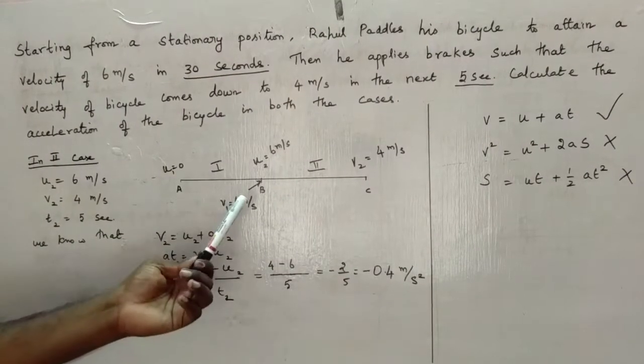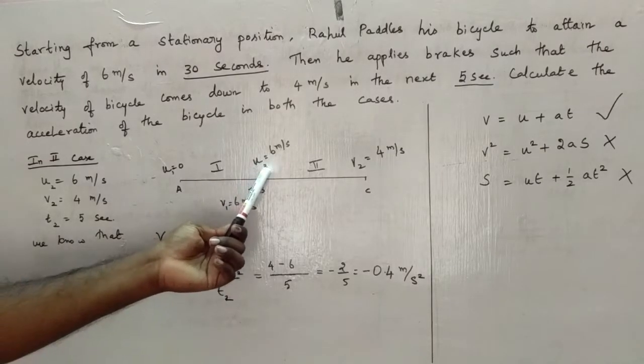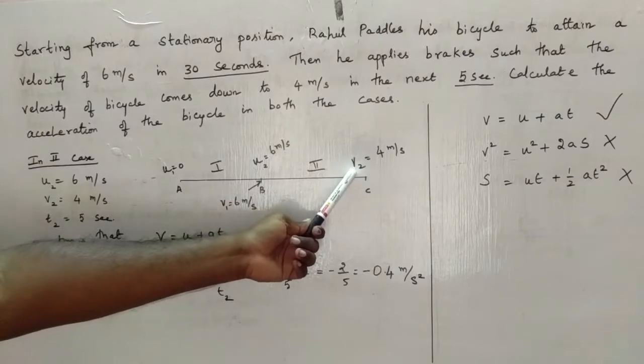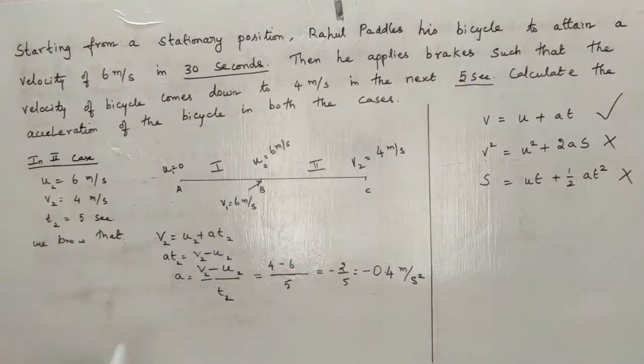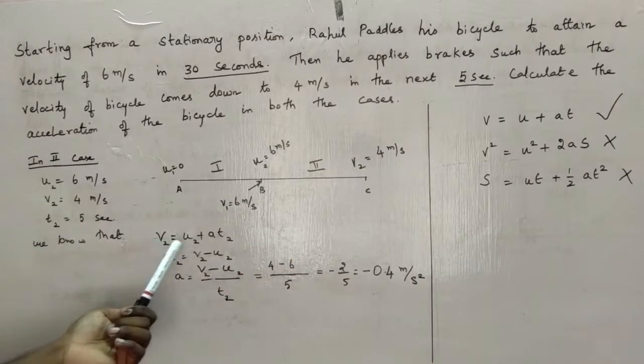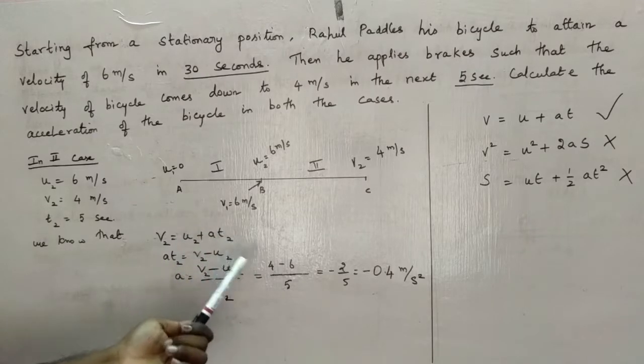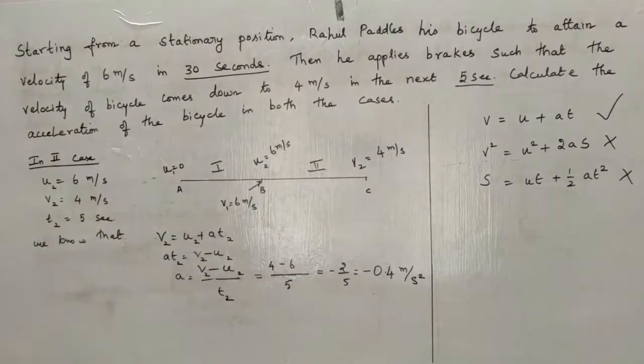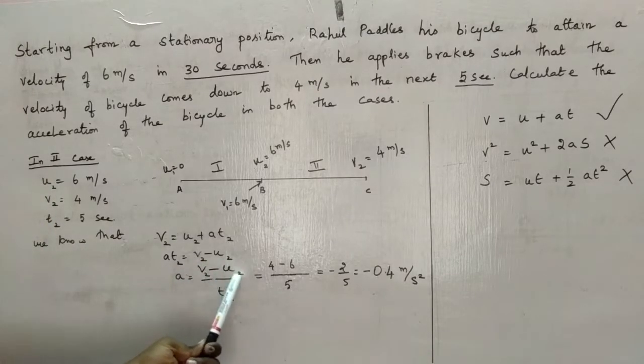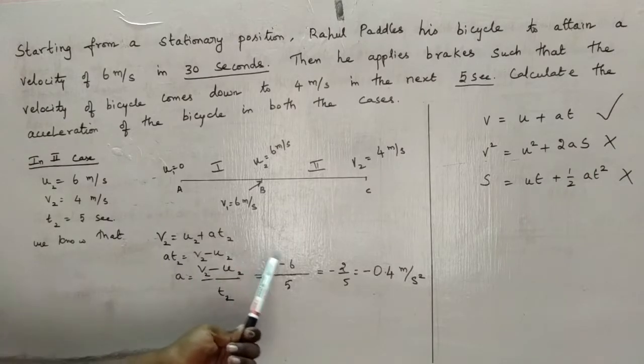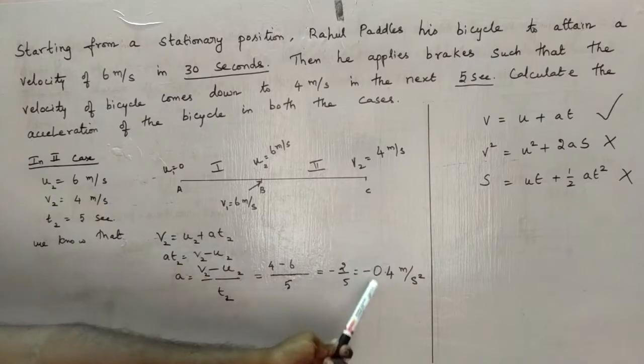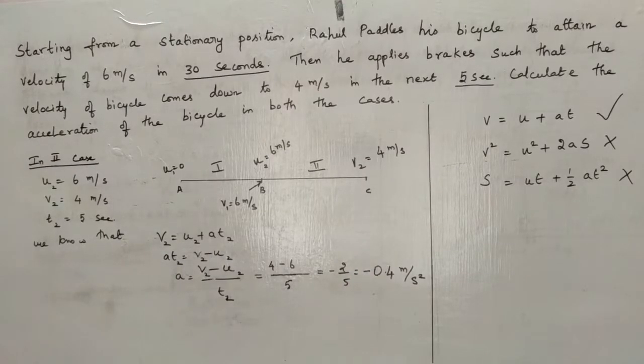In the second case, the initial velocity U2 is equal to 6 meters per second, the final velocity V2 is equal to 4 meters per second. Modifying the equation, V2 = U2 + A2T2, the time taken is 5 seconds. Substituting these values, A = (V2 - U2) / T2 = (4 - 6) / 5 = -2/5 = -0.4 meters per second squared.